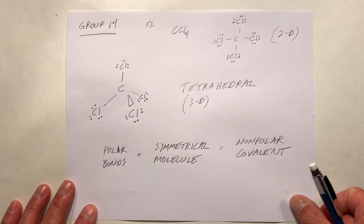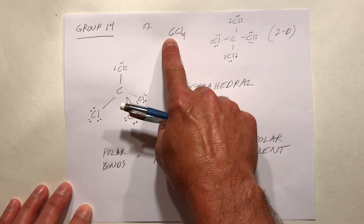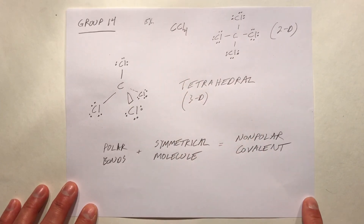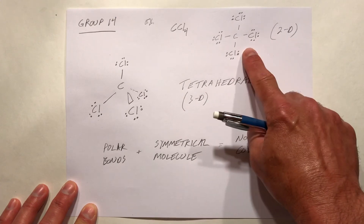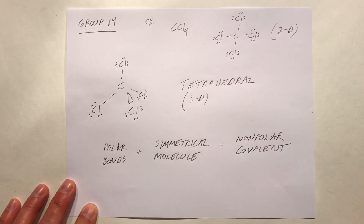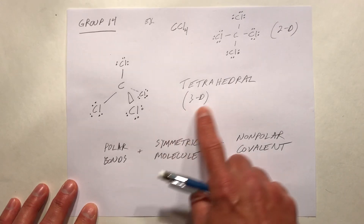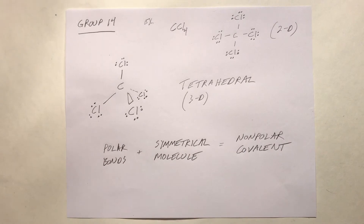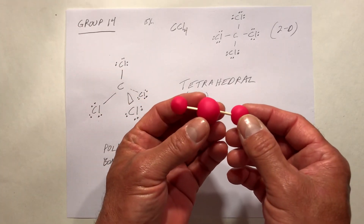For a group 14 element, carbon at the center of a molecule bonded to four chlorines — CCl₄ — in two dimensions it has this Lewis structure. In three dimensions we draw it as a tetrahedral structure.